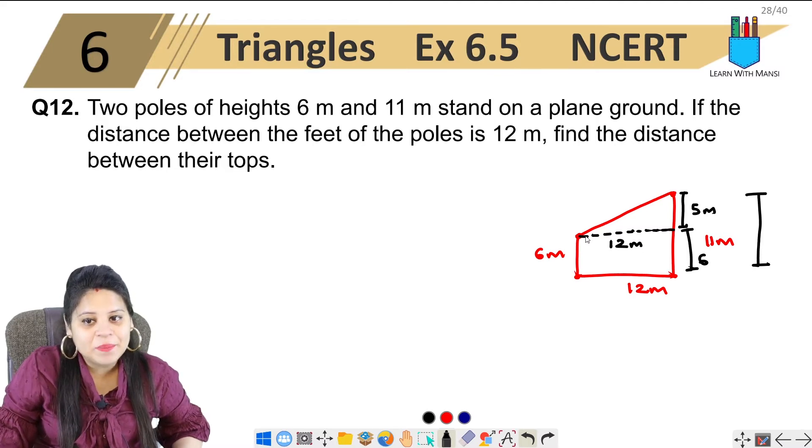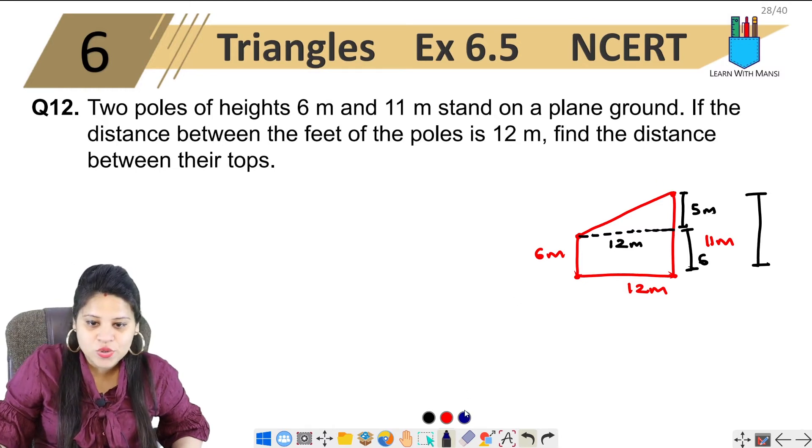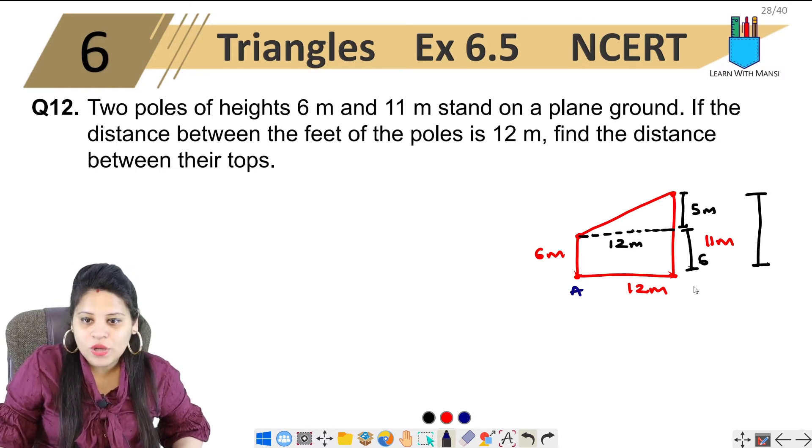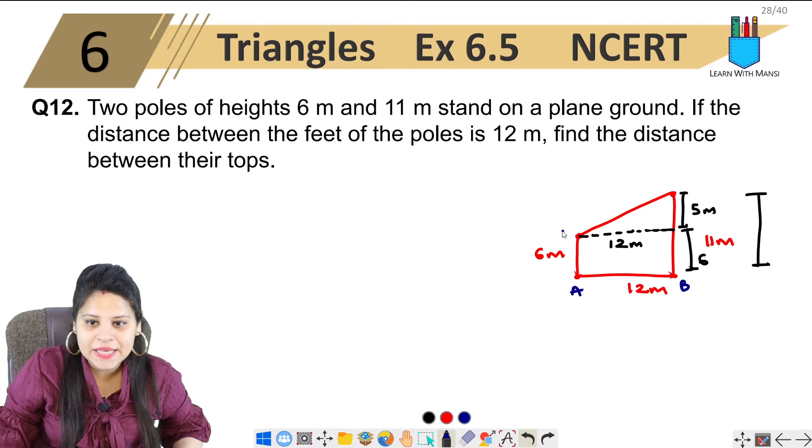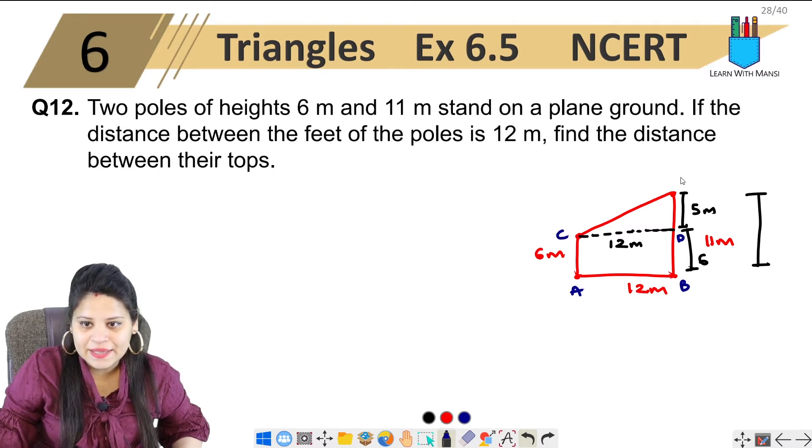So now we have two sides in this triangle. We can find it. So let's give it a name. Let's call this A, B, C, D and E.